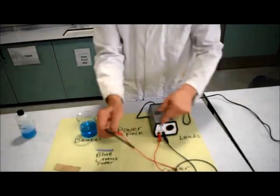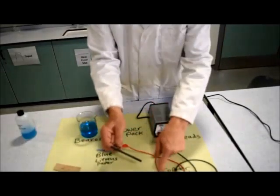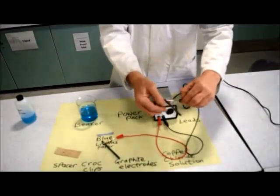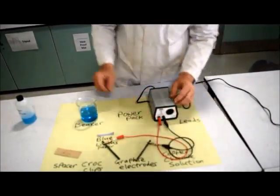The red lead is the positive lead, so this is going to be our positive electrode, and the black lead is going to be our negative electrode.